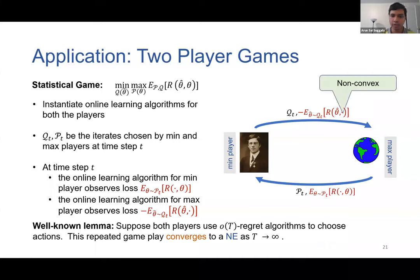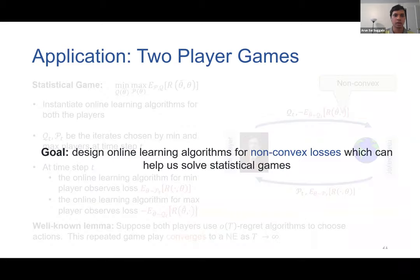One crucial thing to note is that the losses observed by the max player are non-convex in our case, because the risk R is usually a non-concave function in theta. As a result, the max player has to use regret minimizers which can guarantee vanishing regret even for non-convex losses. In the next few slides, we will design online learning algorithms for non-convex losses to help us solve statistical games.